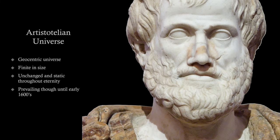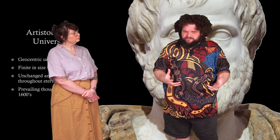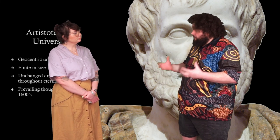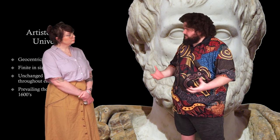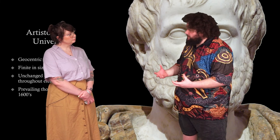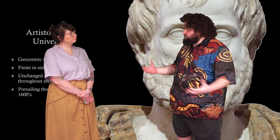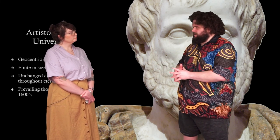For the most part, Western thinkers believed in an Aristotelian universe — a geocentric, finite universe which Aristotle said to be unchanging and static for all of eternity. It wasn't until the early 1600s that this began to change, and the idea of variability of the stars and of the cosmos as a whole really started to come in.